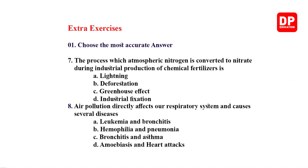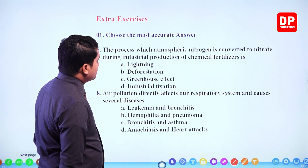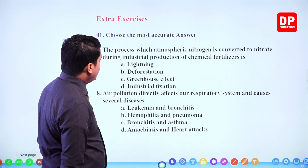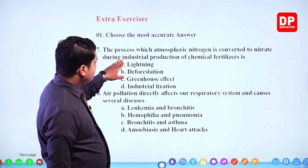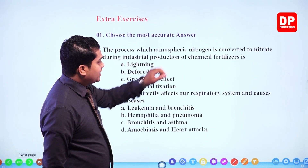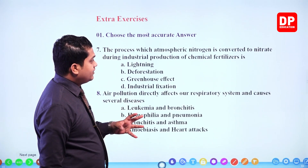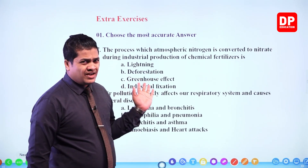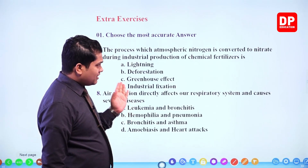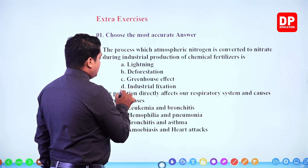Next one: the process by which atmospheric nitrogen is converted to nitrate during industrial production of chemical fertilizers is — lightning, deforestation, greenhouse effect, or industrial fixation. It is mentioned as industrial production of chemical fertilizer, where nitrogen is converted to nitrate. Lightning is atmospheric fixation; deforestation and greenhouse effect are not related. So our answer should be industrial fixation.